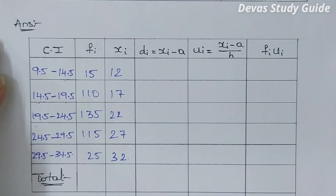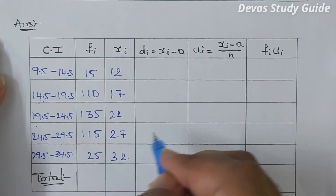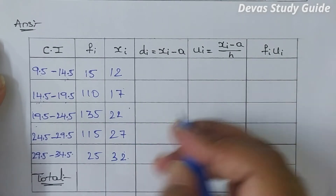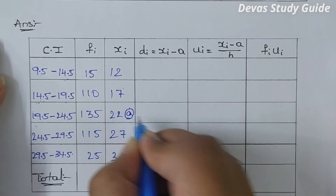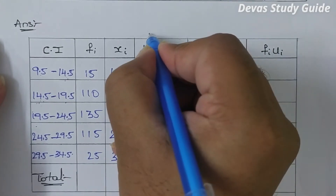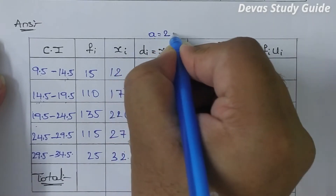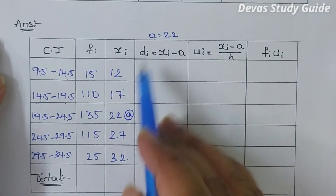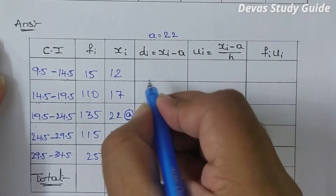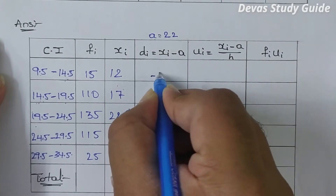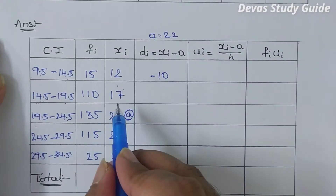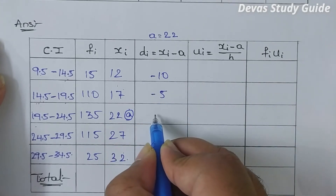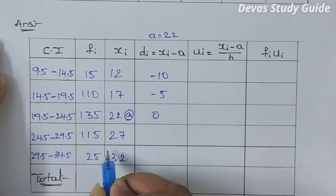This is Xi. If it is the middle term: Xi values are 12, 17, 22, 27, 32. So a is equal to 22. Now computing di = Xi minus a: 12 minus 22 is minus 10; 17 minus 22 is minus 5; 22 minus 22 is 0.